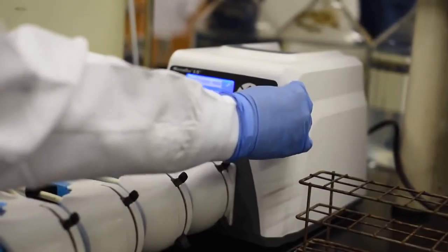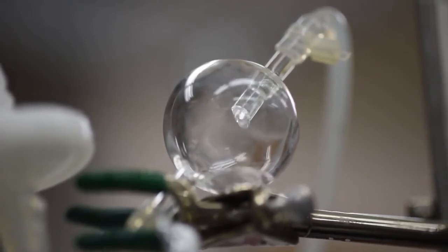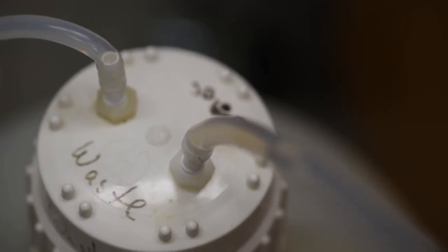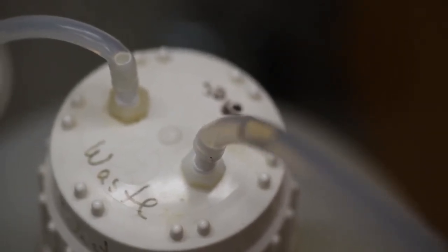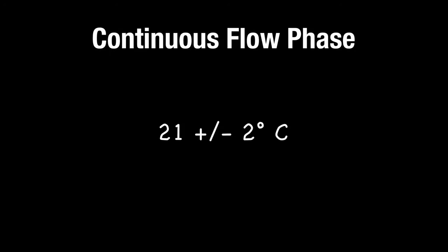Turn the pump on to begin the continuous flow phase. Confirm that the continuous flow medium is being pumped into the reactor and that the waste is freely flowing through the effluent tubing into the waste carboy. It is important that no disinfectant, such as bleach, is added to the waste carboy during the experiment due to concerns with off-gassing. Check the reactor periodically to ensure that the influent or effluent tubing is not blocked. Continuous flow phase runs for 48 hours at 21 plus or minus 2 degrees Celsius.